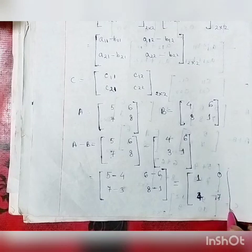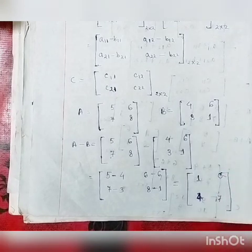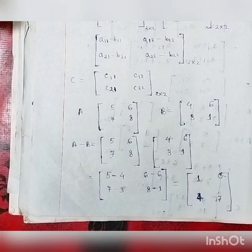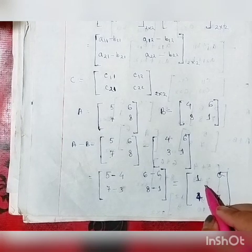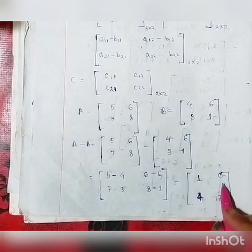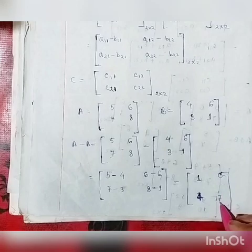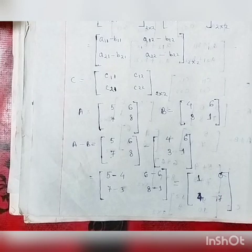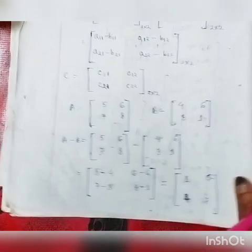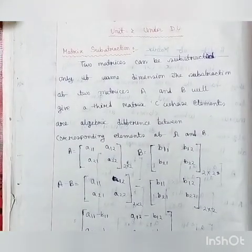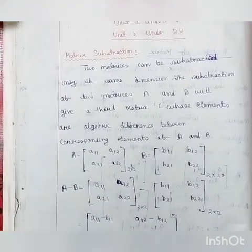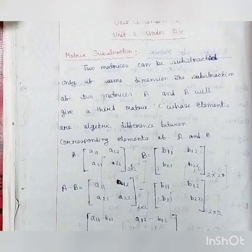So the new matrix C that we get has rows and columns: [1, 0; 4, 7]. This is our resulting matrix from the subtraction. I hope you have understood matrix subtraction. Please comment on this video. Thank you.